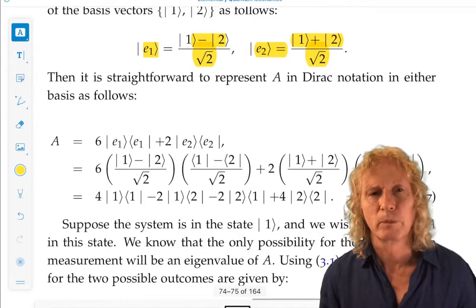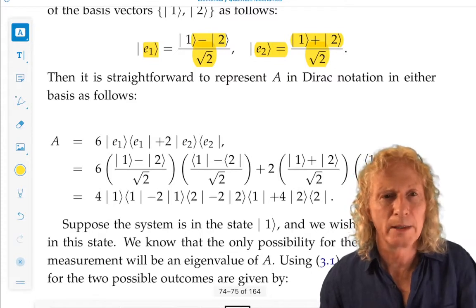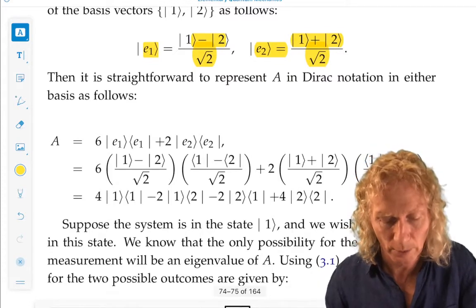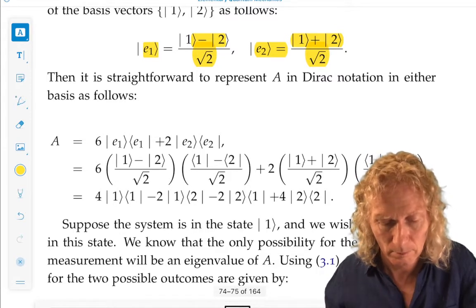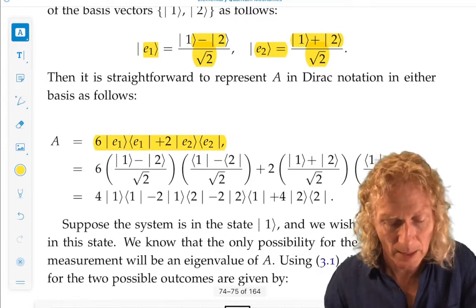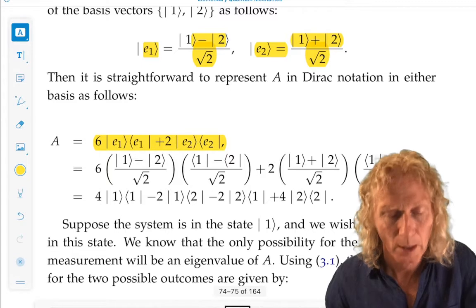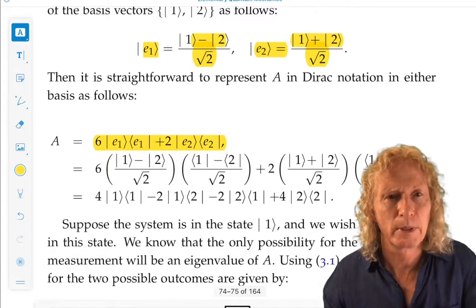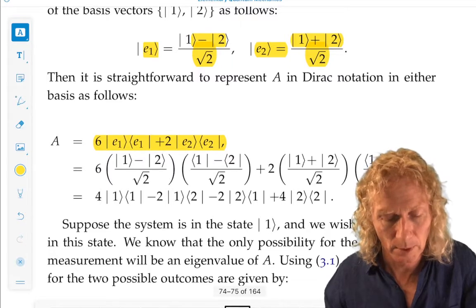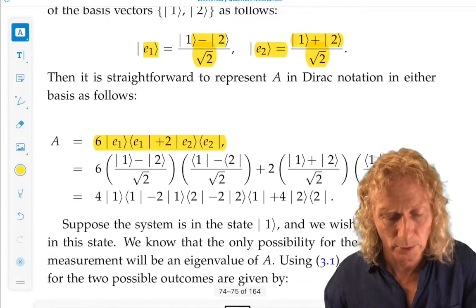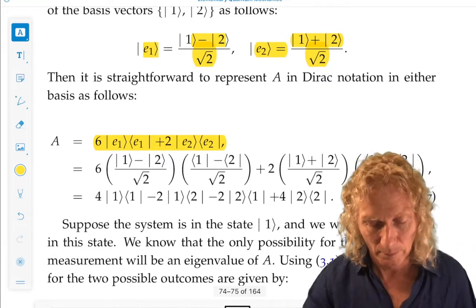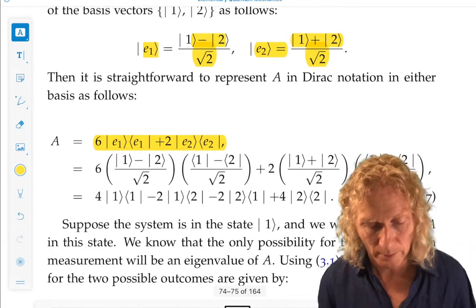So, we can write A also in spectral representation in Dirac form in this way. It's the eigenvalues, 6 and 2, multiplying the ket-bra combination related to the corresponding eigenvectors for the eigenvalues.